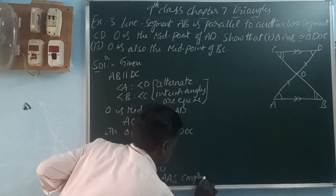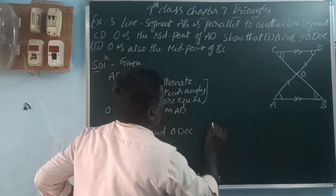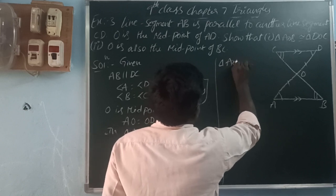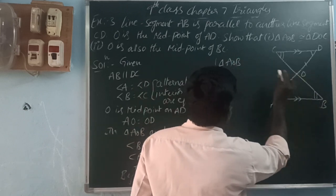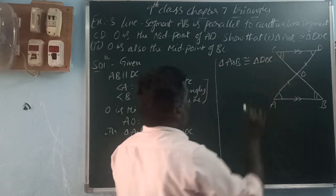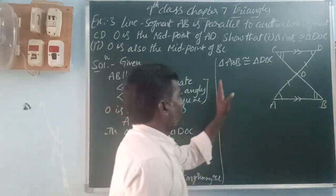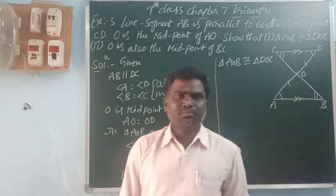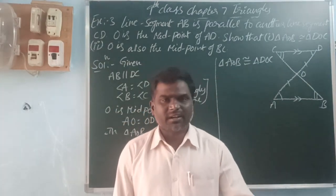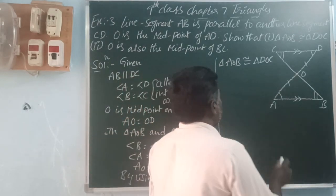by the congruency rule, triangle AOB is congruent with triangle DOC. When triangles are congruent, their CPCT are equal. CPCT means Corresponding Parts of Congruent Triangles — that means corresponding sides and corresponding angles are equal.